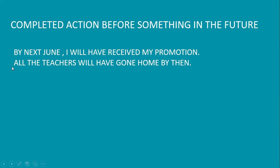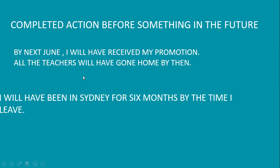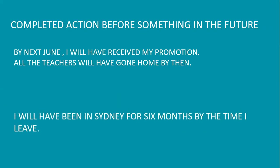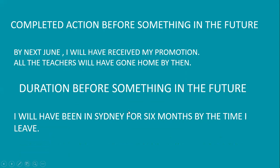The future perfect expresses the idea that something will occur before another action in the future. It can also show that something will happen before a specific time in the future. For duration before something in the future: 'I will have been in London for six months by the time I leave.'